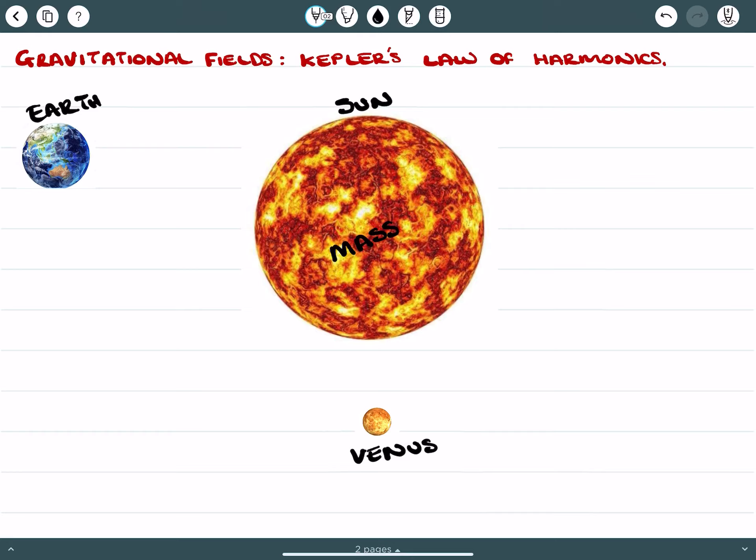We need to ascertain the radius from the center of the Sun to the center of both planets, and understand what their periods are. Venus is in a smaller orbital radius, so we would expect a shorter period.